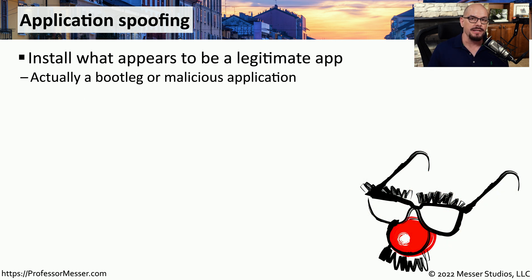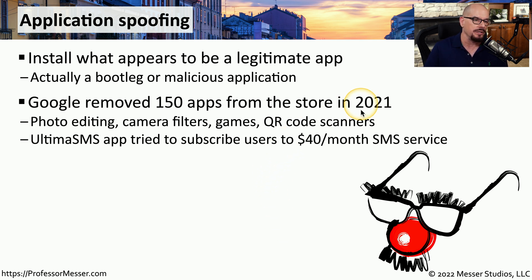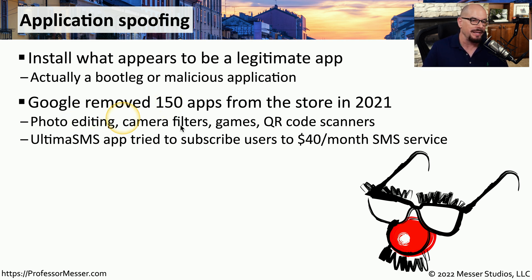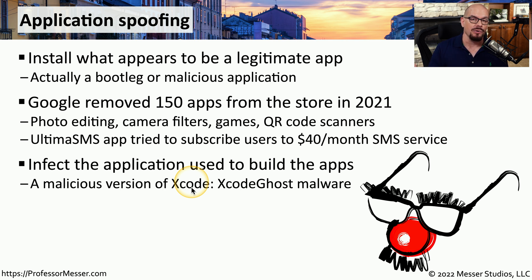Another concern on mobile devices are applications that pretend to be one thing but are actually malicious software — this is called application spoofing. In 2021, Google removed 150 apps from their app store that were not legitimate applications. Some of these were photo editing, camera filters, games, and other utilities. One app called Ultima SMS successfully subscribed users to a $40 a month SMS service. To build applications for iOS or iPadOS, you would use Xcode, software provided by Apple. There is a malicious version called Xcode Ghost, which includes malware that ultimately gets added to whatever application you're developing.